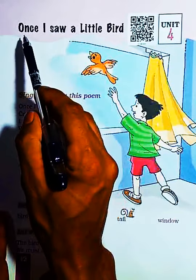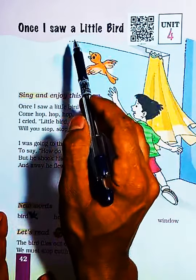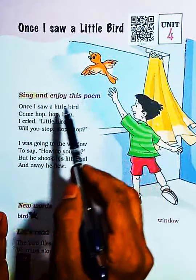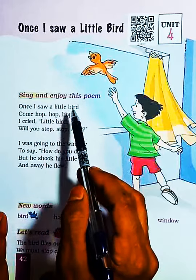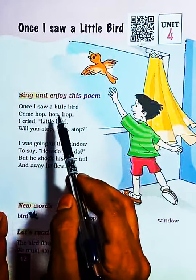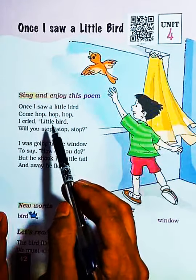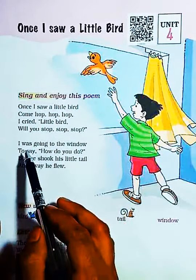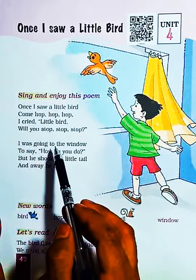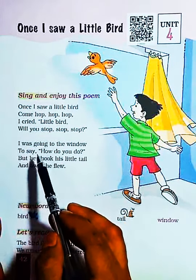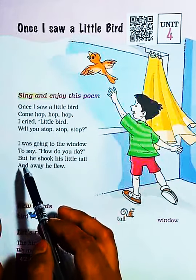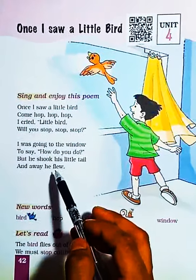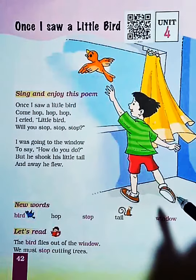Let's read it again for you. Once I saw a little bird — sing and enjoy this poem. Once I saw a little bird come hop, hop, hop. I cried, 'Little bird, will you stop, stop, stop?' I was going to the window to say how do you do, but he shook his little tail and away he flew.